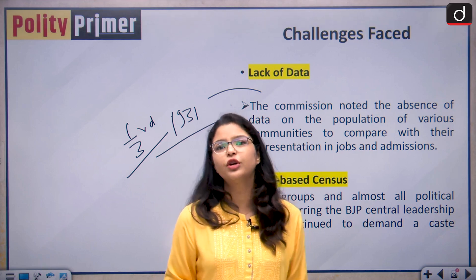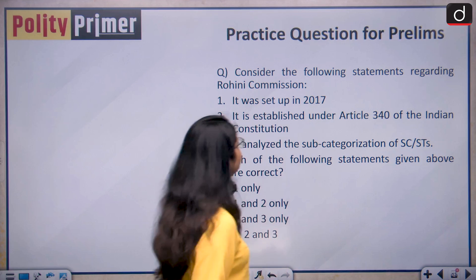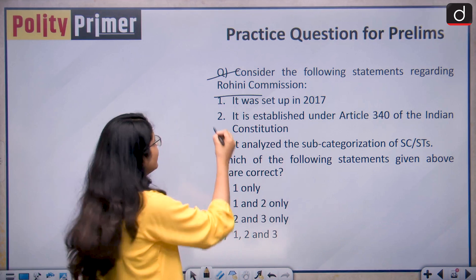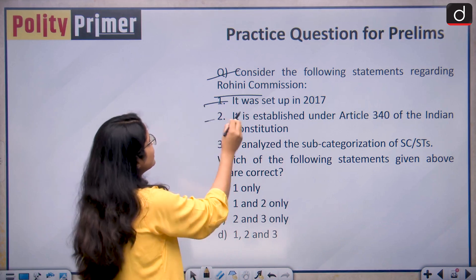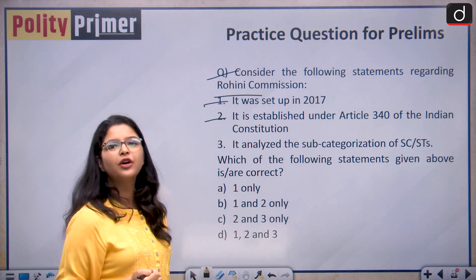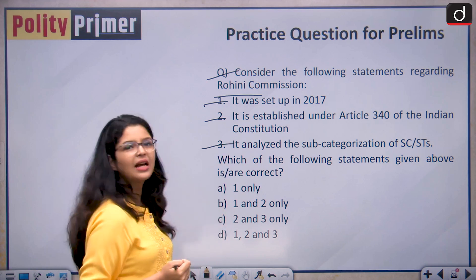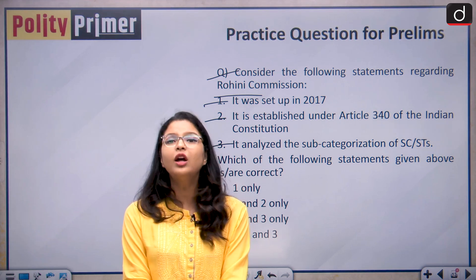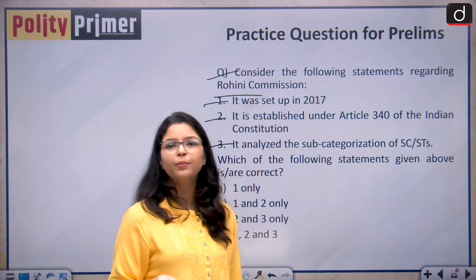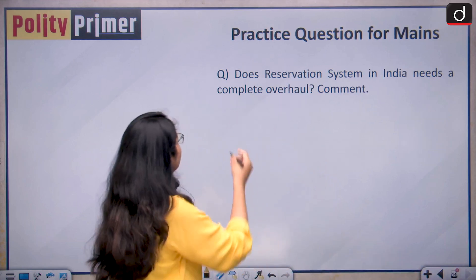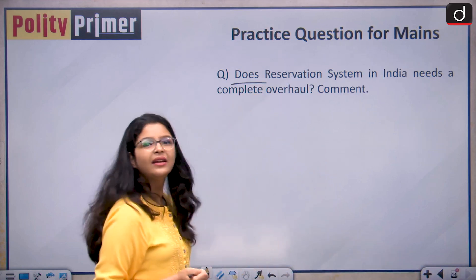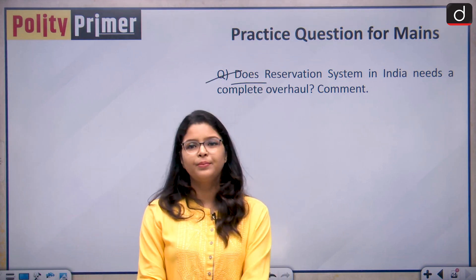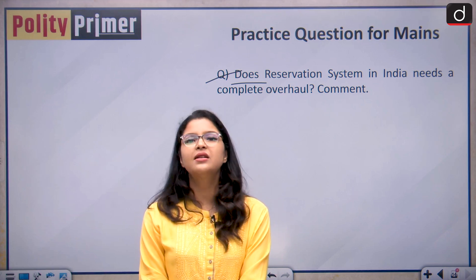For the prelims practice question, consider the following statements about the G. Rohini Commission: It was set up in 2017; it was established under Article 340 of the Indian Constitution; it analyzed the sub-categorization of SCs and STs. Kindly drop your answer in the comment box below. For the mains practice question: Does the reservation system in India need a complete overhaul? Comment. Kindly practice this question for your mains writing practice.